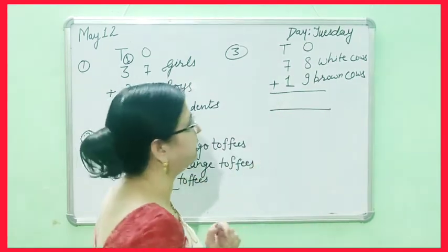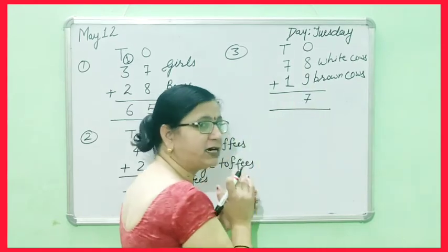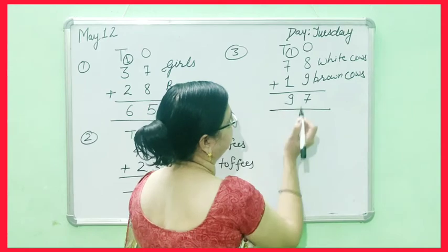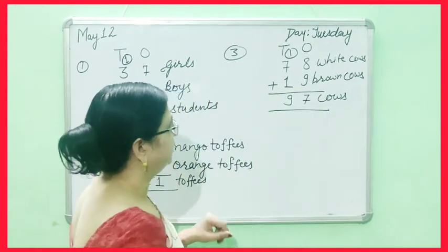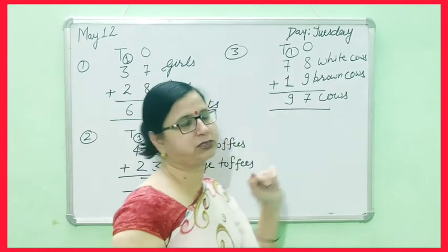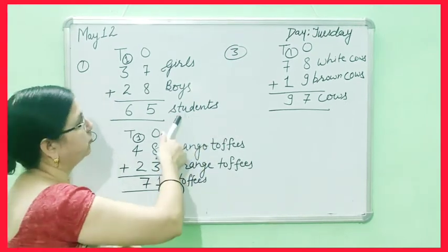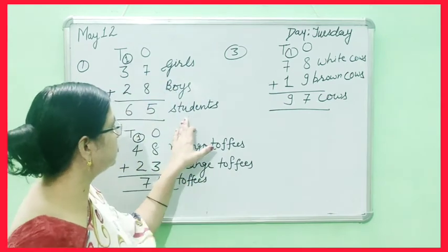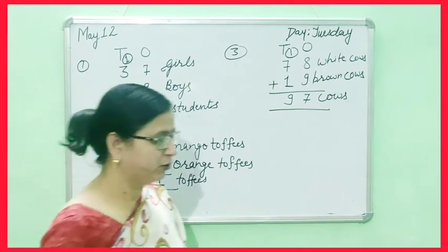How many cows total? We will add. 8 and 9 is 17, write 7 carry 1. 7 and 1 is 8, plus 1 is 9. 97 cows. We will write here cows. What we have to find out, we have to write here. Like if we find out cows, we write cows. If toffees, we write toffees. If students, we write students.